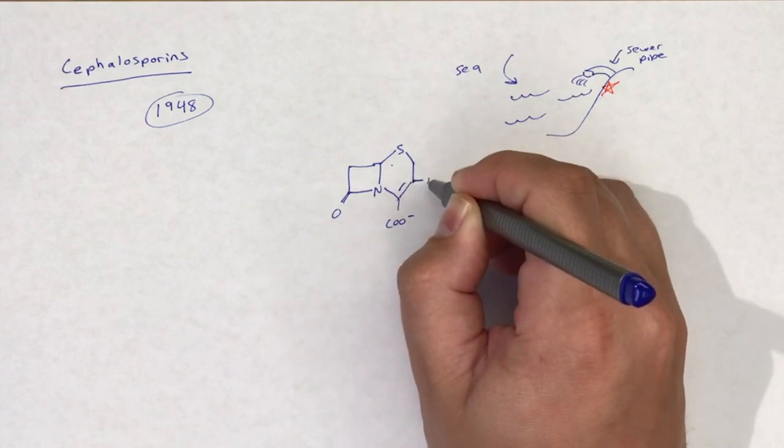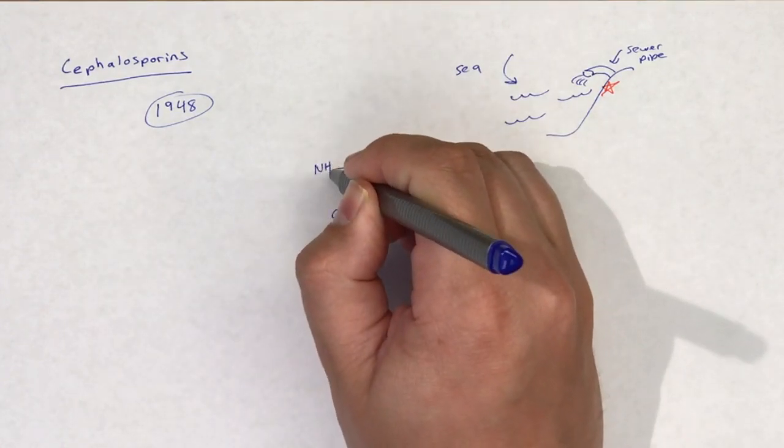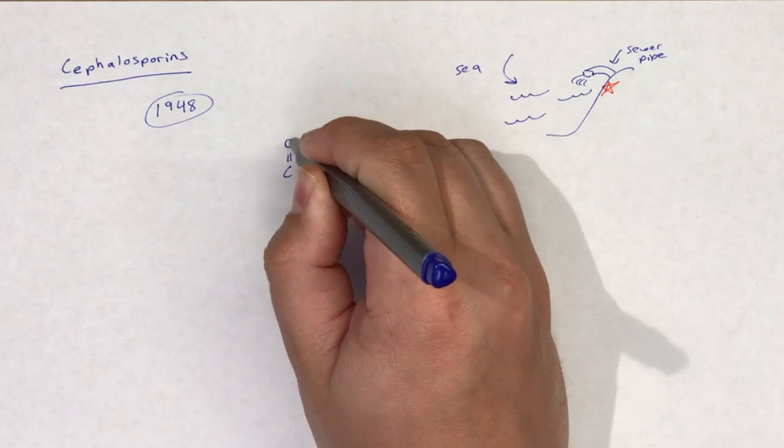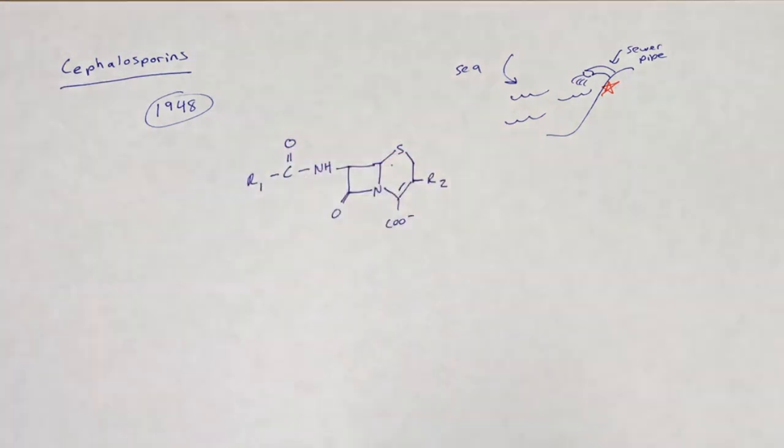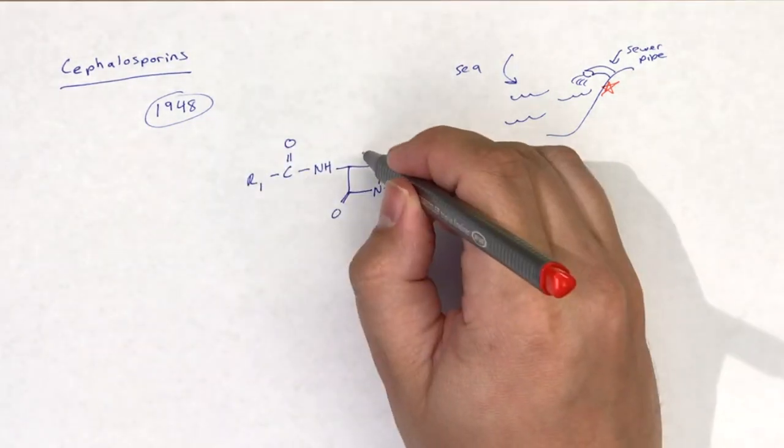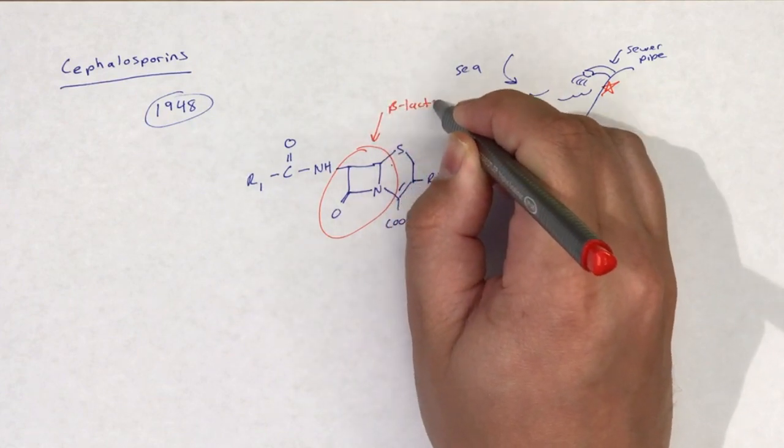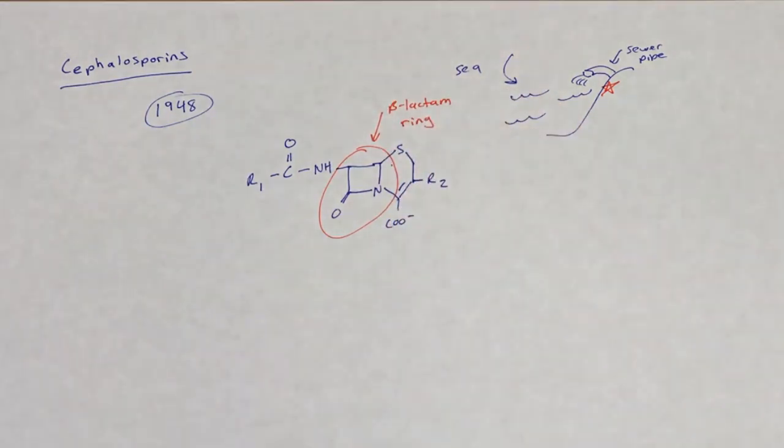The antibacterial activity of the base structure of the cephalosporins is limited. The creation of semi-synthetic derivatives that add side groups at both the R1 and R2 locations greatly enhances the antibacterial action of the cephalosporin.